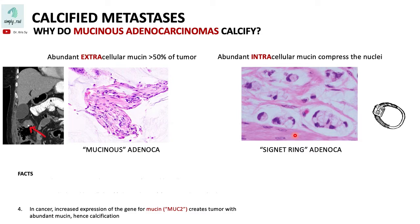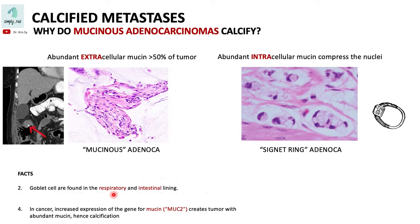Now because goblet cells are found in both respiratory and intestinal lining, it is no surprise that mucinous adenocarcinomas can also be found in lung cancers. The mucin produced by the cancer cells can be expelled as sputum.